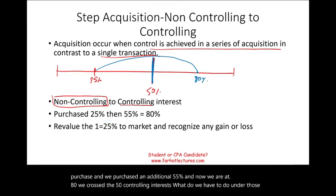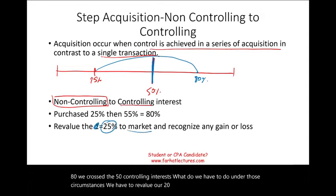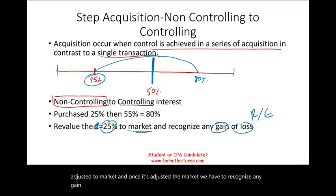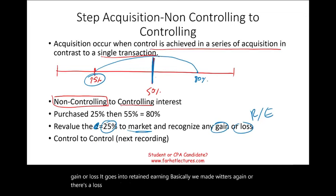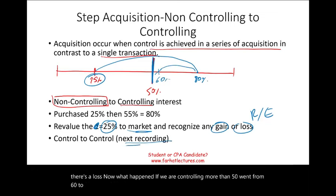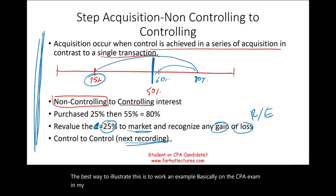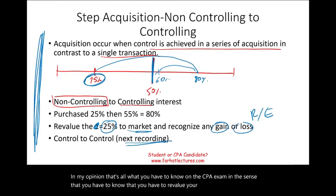We have to revalue our 25% interest to market. This 25% is adjusted to market, and once it's adjusted, we have to recognize any gain or loss — it goes into retained earnings. Now, what happens if we were already controlling more than 50%, say we went from 60% to 80%? We'll look at that scenario in the next recording. On the CPA exam, you have to know that you must revalue your old position to fair market value and book a gain or a loss.